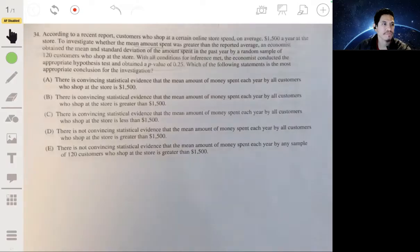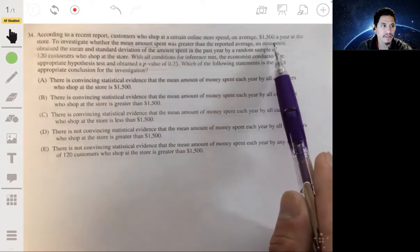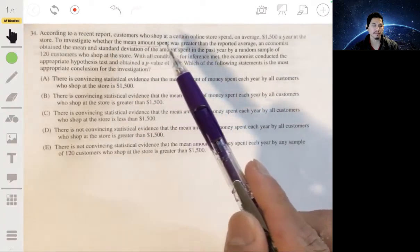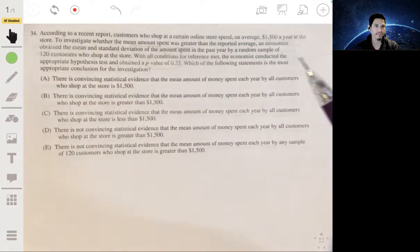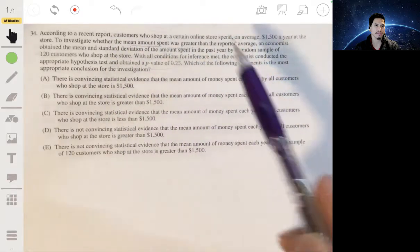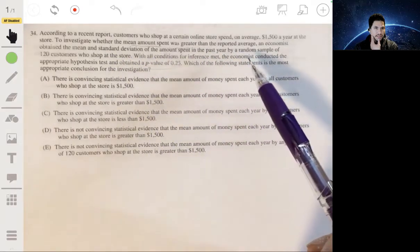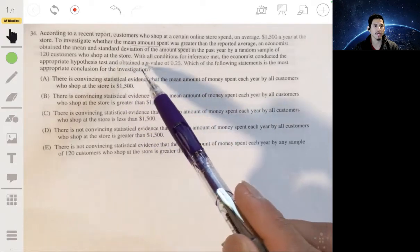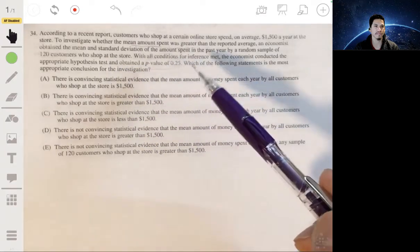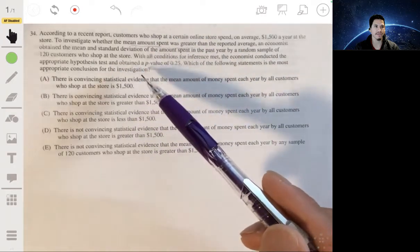All right, so problem 34. According to a recent report, customers who shop at a certain online store spend on average $1,800 a year at the store. To investigate whether the mean amount spent was greater than the reported average, an economist obtained the mean and standard deviation of the amount spent in the past year by a random sample of 120 customers who shop at the store. With all conditions for inference met, the economist conducted the appropriate hypothesis test and obtained a p-value of 0.25. Which of the following statements is the most appropriate conclusion?